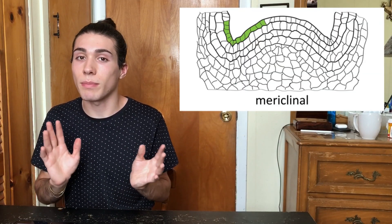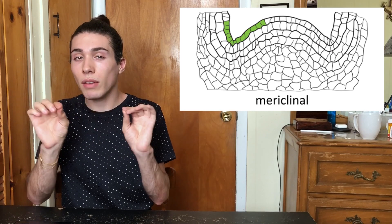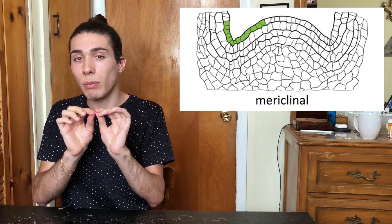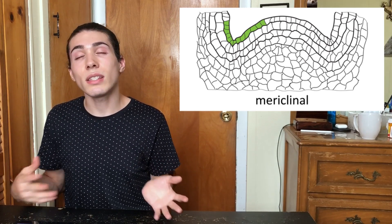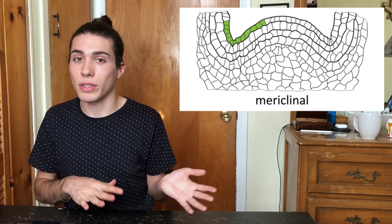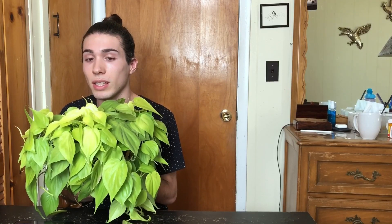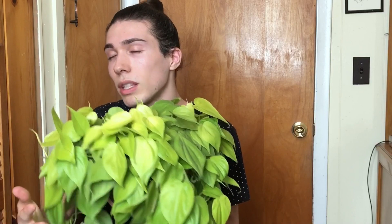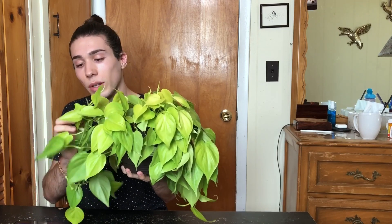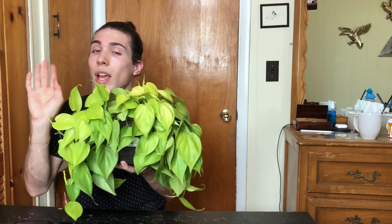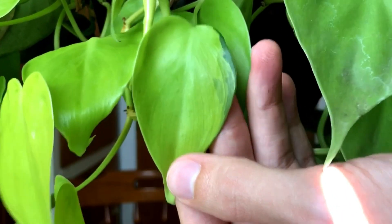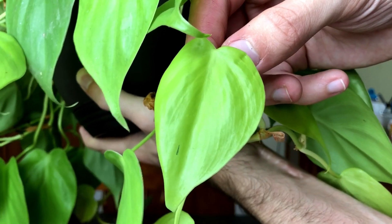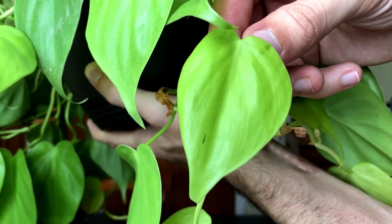The second type is mericlinal chimeric variegation, where only part of the surface of the meristem is covered by abnormally colored cells of a different genotype. This is the most unstable type. Here is a lemon lime philodendron hederaceum. You may be thinking the leaves are all one color, but there are some spots of variegation. Here is one — you can see some dark green. Here is another: there's really no rhyme or reason to it; it's just like a little speck on the leaf.